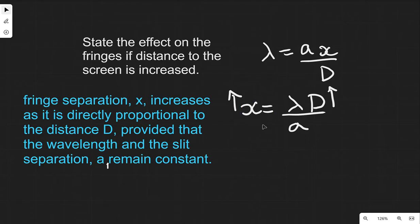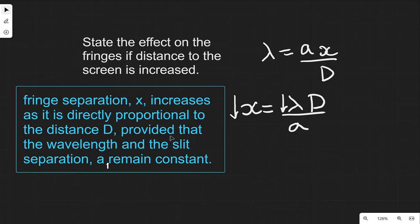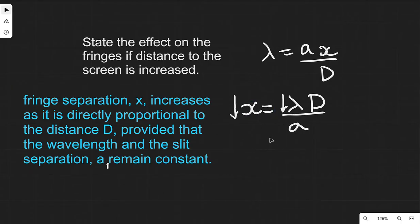Another format of this question: what happens to the fringe separation if the distance D is constant but we use light of a shorter wavelength? If you use light of shorter wavelength and everything else remains constant, then X will go down. The fringe separation decreases as it is directly proportional to the wavelength, provided that D and A remain constant.